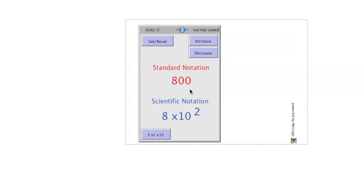As the numbers change, both the Standard Notation and the Scientific Notation representations change. You can stop at any time to compare values. For example, eight hundred in Standard Notation is shown as eight times ten to the two in Scientific Notation.